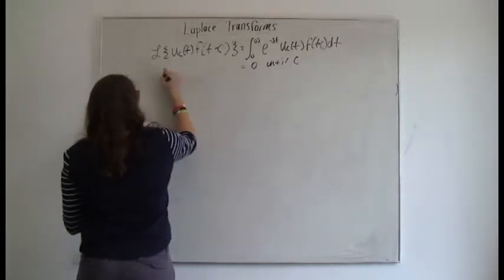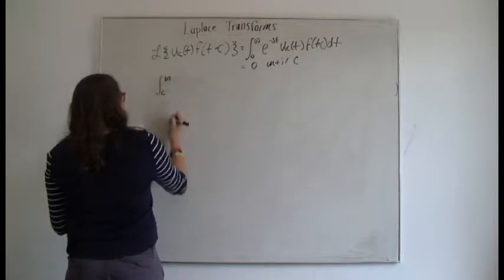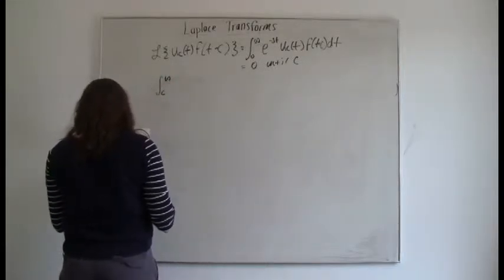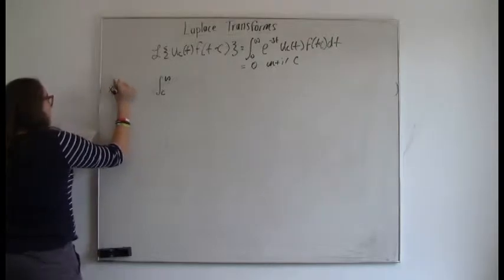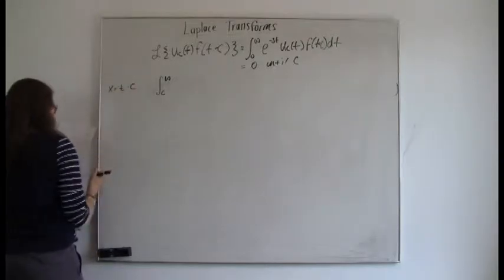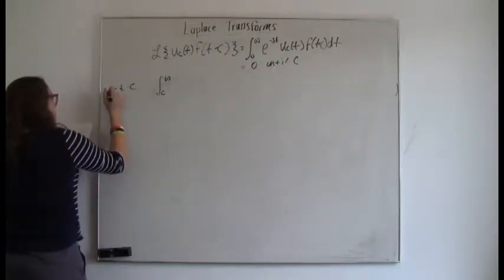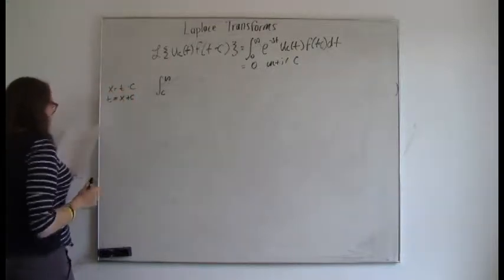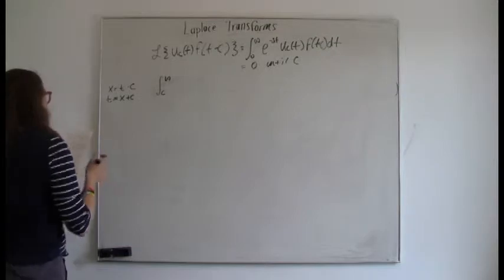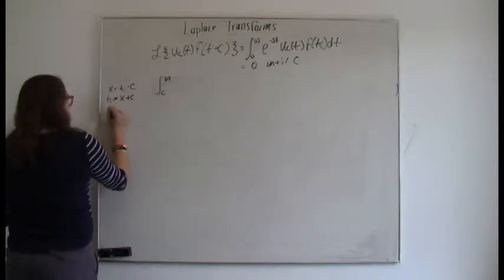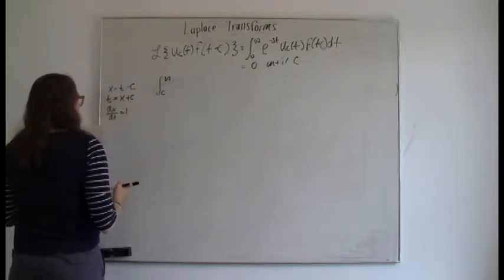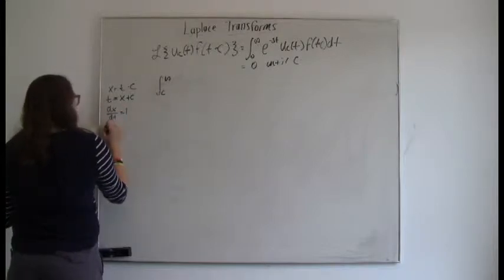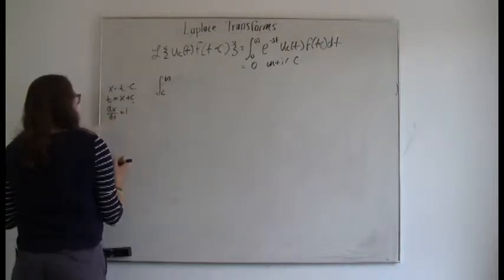To do that, let's make a substitution. Let x equal t minus c. Solving for t, we get t equals x plus c. This means dx over dt equals one — since c is a constant it goes away — so dx equals dt.